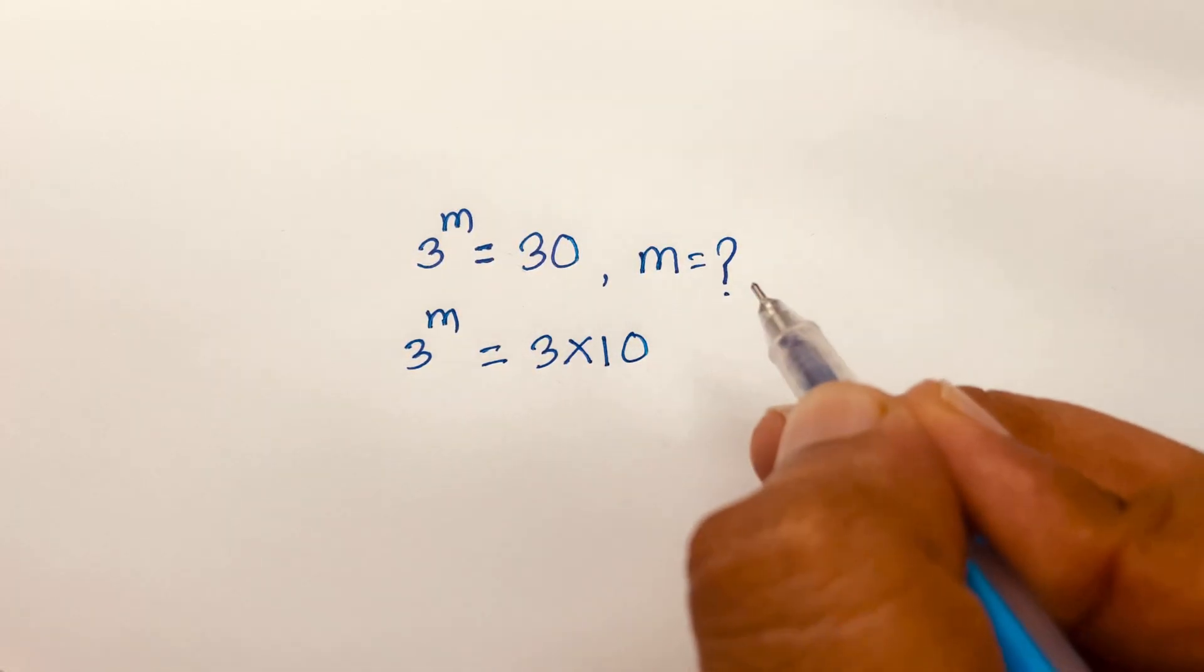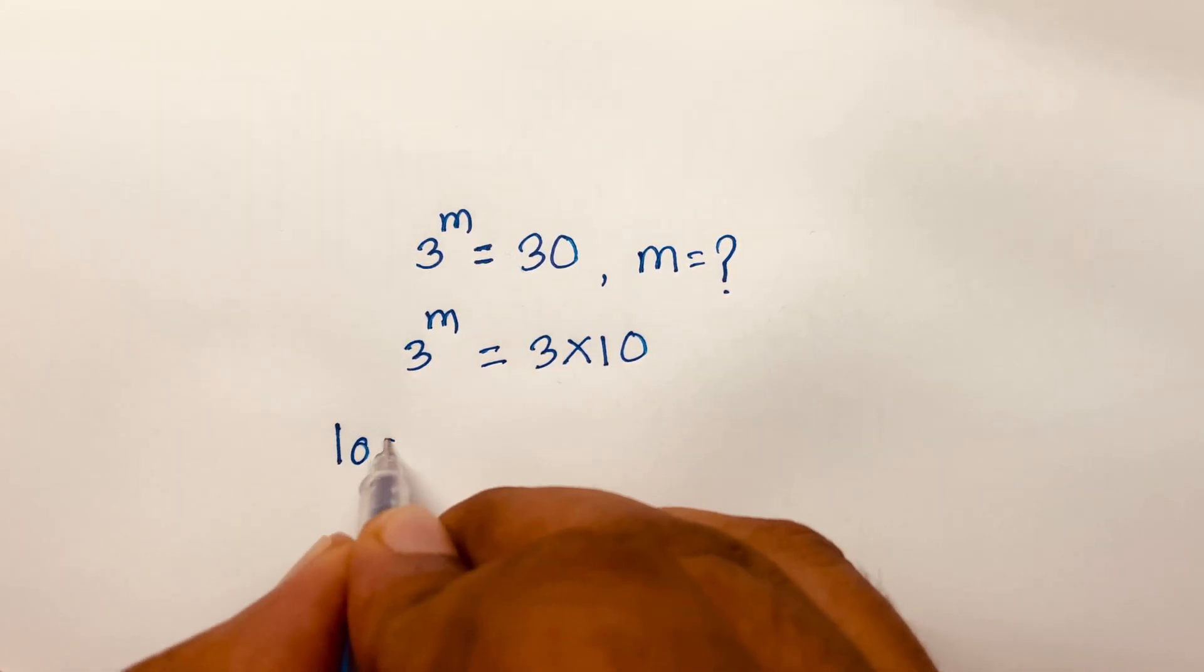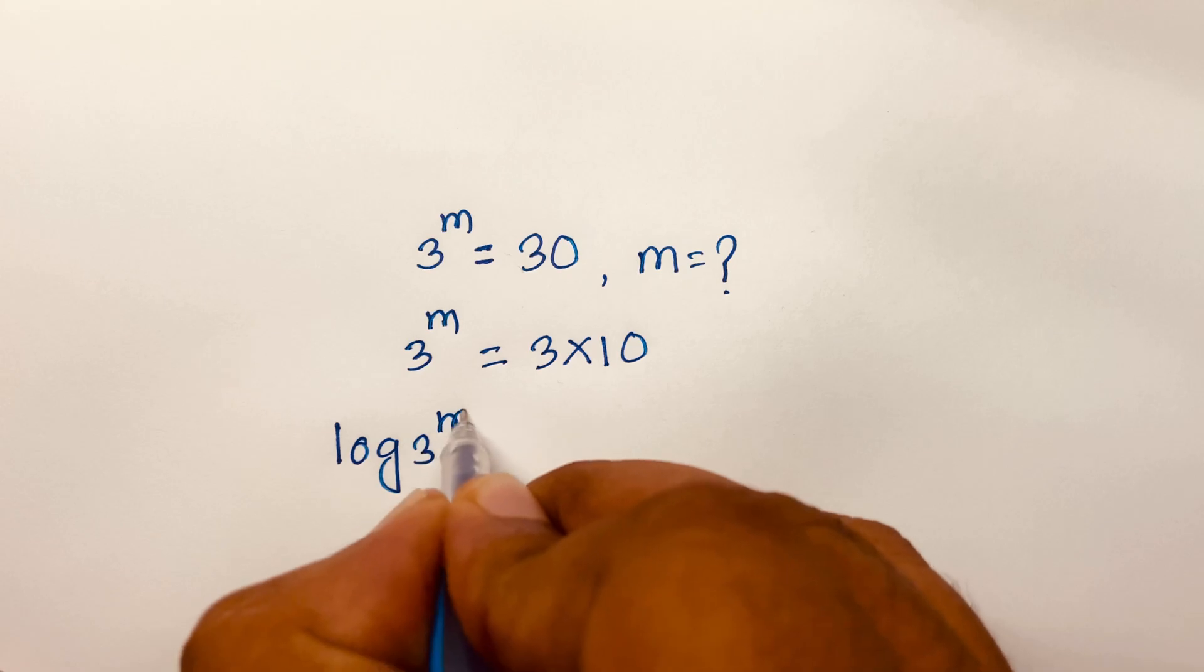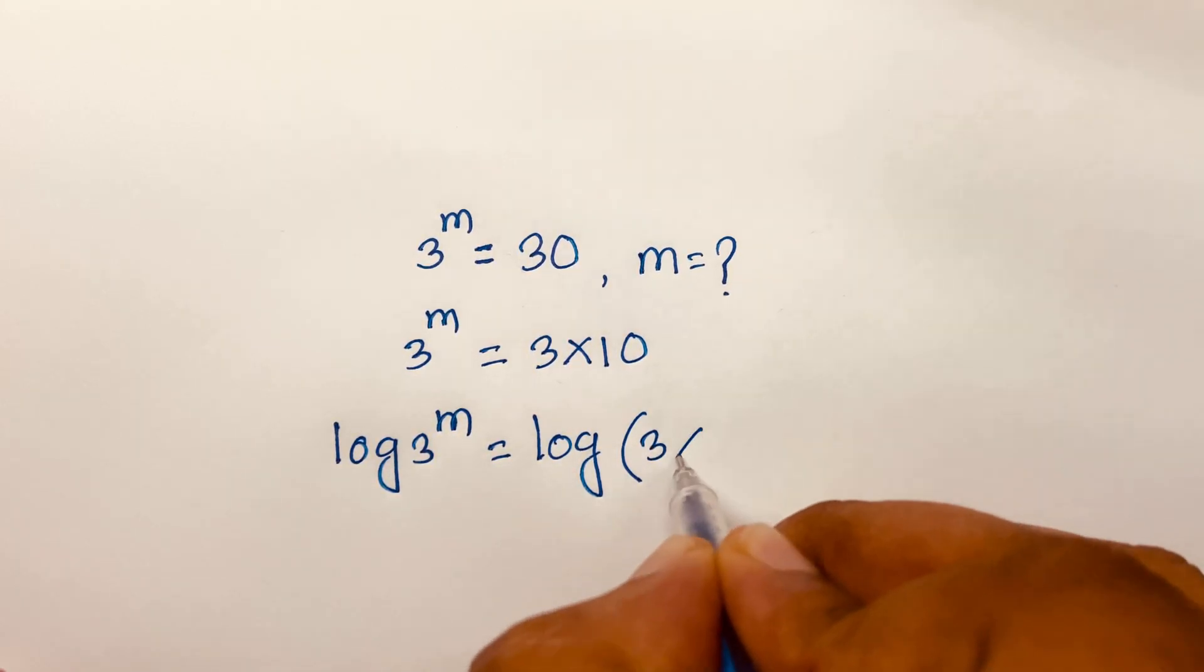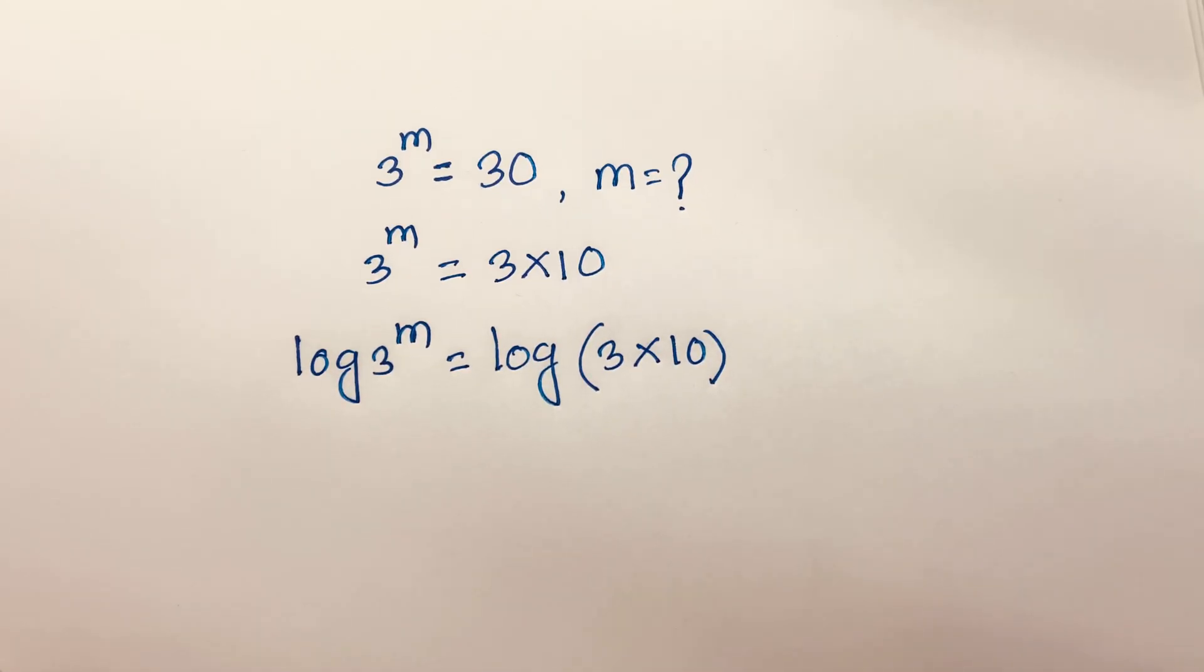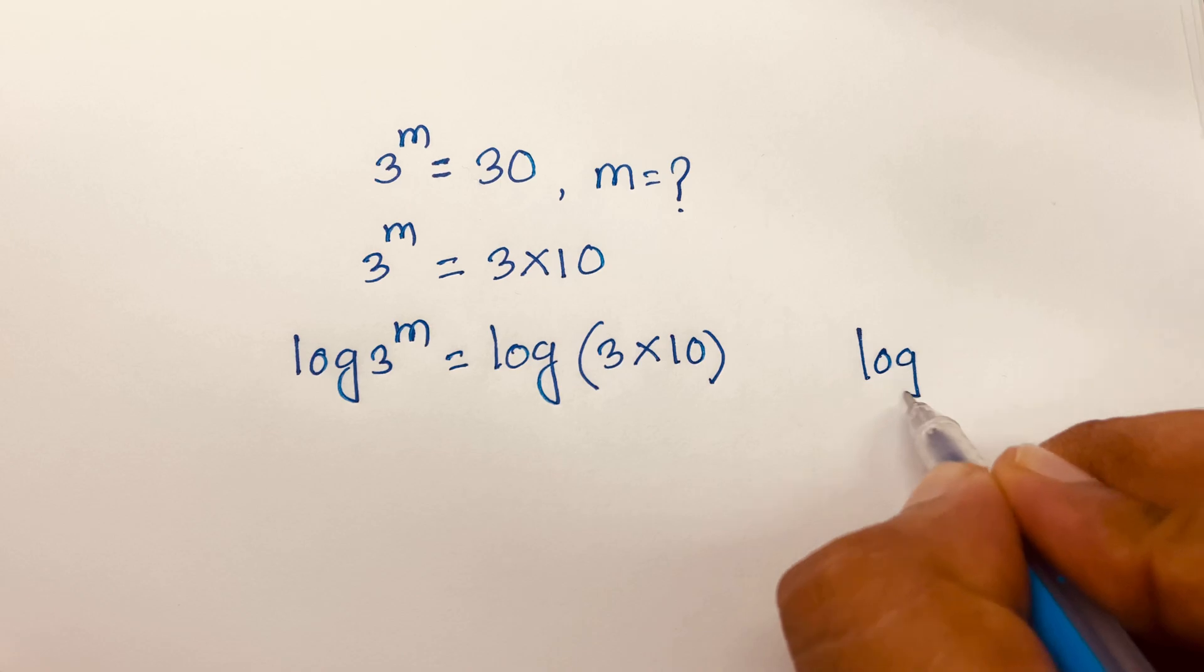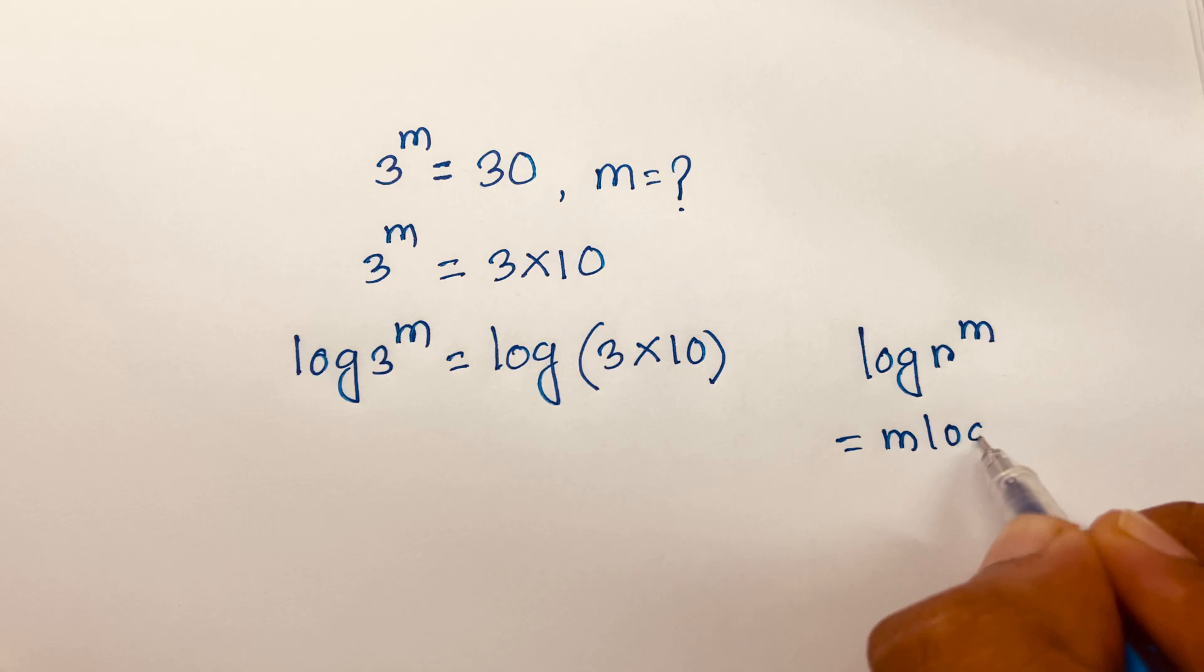Then I use both side log, so it will be log 3 power m equals log of 3 times 10. Then we know that the logarithm rule: log r to the power m equals m log r.